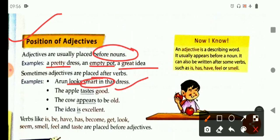Verbs like is, be, have, has, become, get, look, seem, smell, feel, and taste are placed before adjectives.